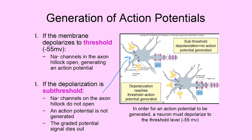With a subthreshold depolarization, we don't get an action potential generated — this neuron does not communicate the fact that there was a change in its environment, and no other part of the body becomes aware of that change. What we sometimes see instead is a threshold depolarization, and a diagram explains what's going on at threshold level.